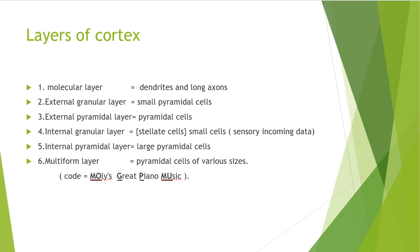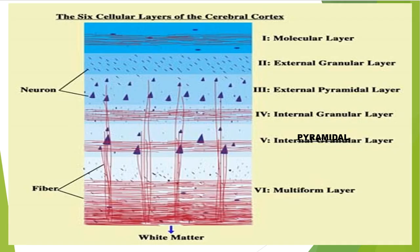The number of neurons varies from 10 to 70 million. The cortex features a multilayer structure with six well-distinguishable layers: the first is the molecular layer, second is the external granular layer, third is the external pyramidal layer, fourth is the internal granular layer, fifth is the internal pyramidal layer, and sixth is the multiform layer.